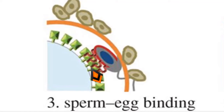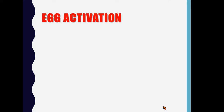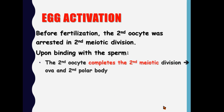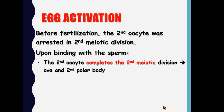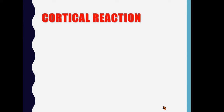After binding, only the nucleus of the sperm enters and fuses with the nucleus of the ovum. Immediately after penetration, there is activation of the egg, called egg activation. Before fertilization, the secondary oocyte was arrested in the second meiotic division. Upon binding with the sperm, the secondary oocyte completes its second meiotic division, leading to formation of the egg and another cell called the second polar body. Each contains only 23 chromosomes — half the number of human chromosomes — and half the amount of DNA.